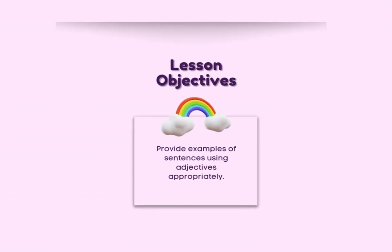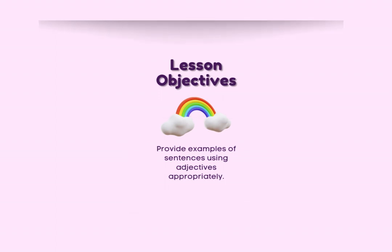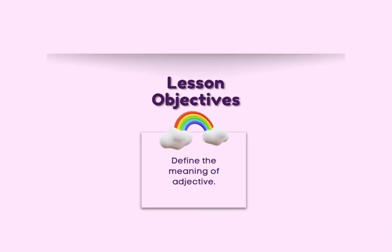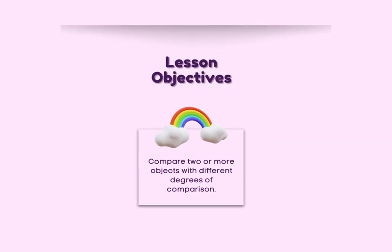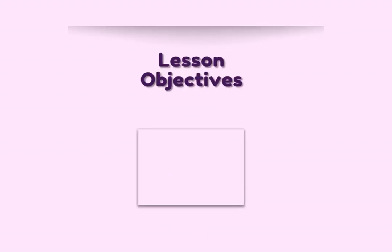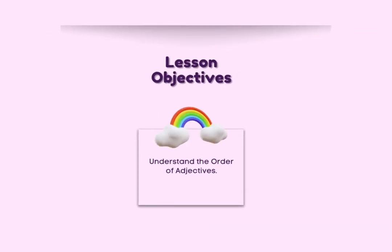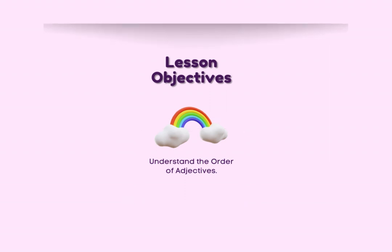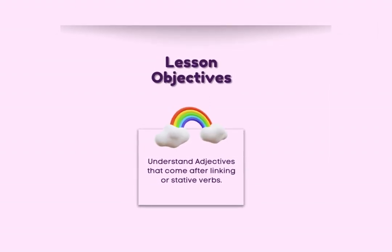Our lesson objectives are: to provide examples of sentences using adjectives; to define the meaning of adjective; to compare two or more objects with different degrees of comparison; to understand the order of adjectives in sentences — no one actually knows why or when this became an English rule, but especially in writing, the order does matter. Finally, you should understand a little more about the adjectives that come after linking or stative verbs.